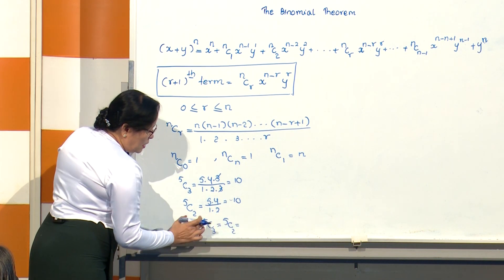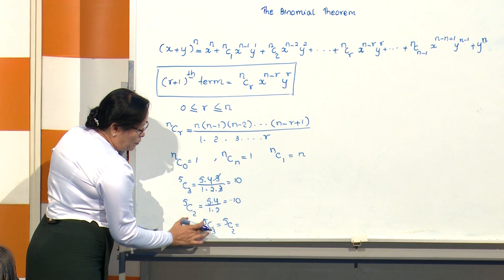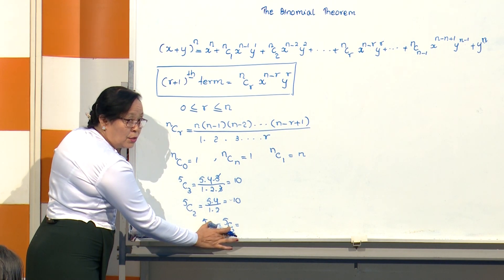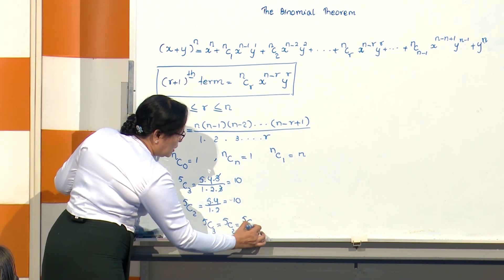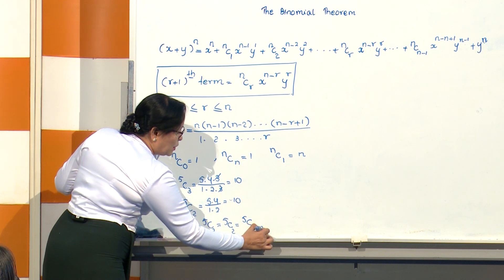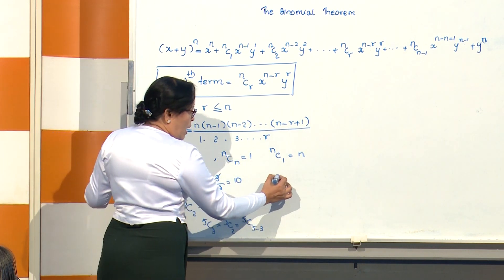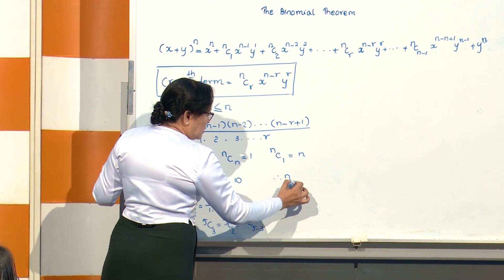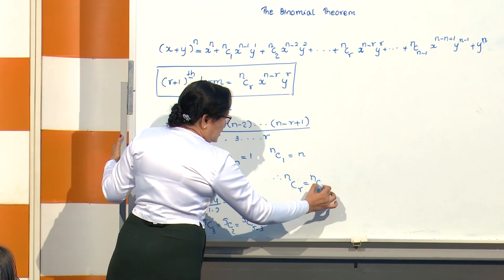So 5C3 equals 5C2. This means 5C3 equals 5C(5 minus 3), that is 5C2. So nCr equals nC(n minus r). 5C3 equals 1.